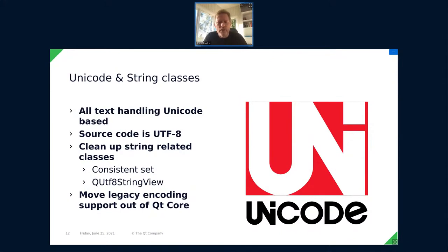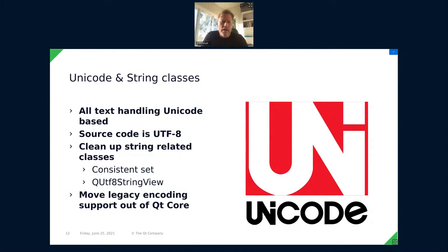We also finished Unicode handling - something that was only 80% done in Qt5. In Qt6, all text handling is Unicode-based. We assume UTF-8 for data read in by default, UTF-16 for all internal data, and source code is also assumed to be UTF-8. We cleaned up all string-related classes: added QUtf8StringView for UTF-8 encoded data, completed QStringView to mirror the full read-only API of QString, deprecated certain APIs such as QStringRef. We also moved legacy encoding support out of Qt Core - QTextCodec is no longer part of Qt Core. We have QStringConverter classes for Unicode conversions plus Latin-1 and local 8-bit.